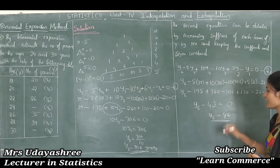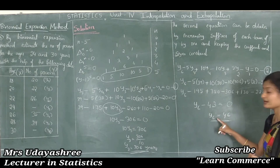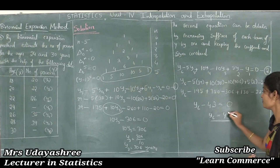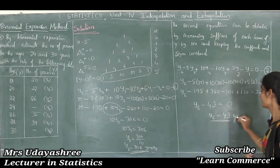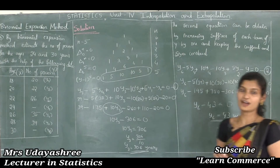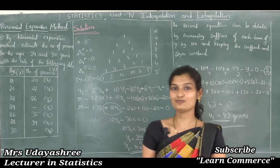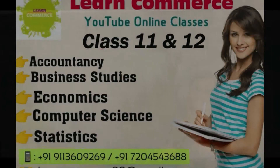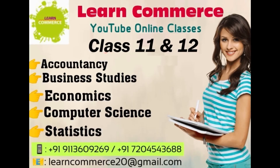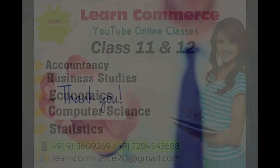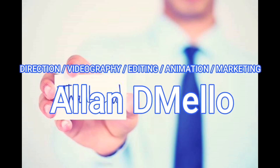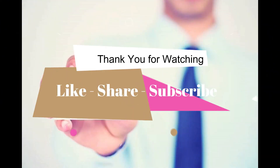So the missing value y6 = 43. These are the two missing values. Thank you for watching this video. Don't forget to like our video and subscribe to our YouTube channel for all the updates. Thank you.